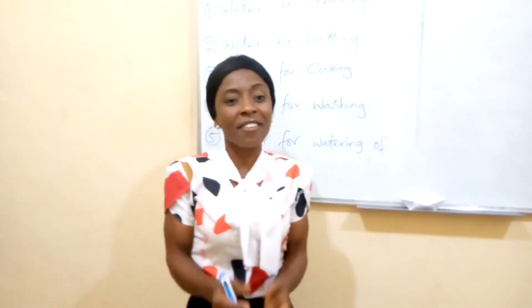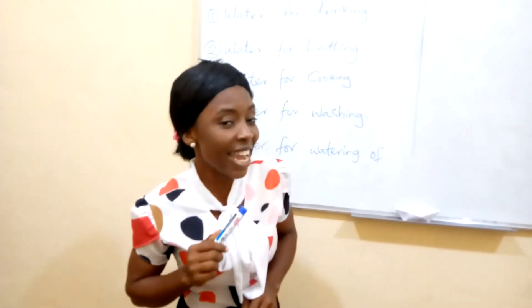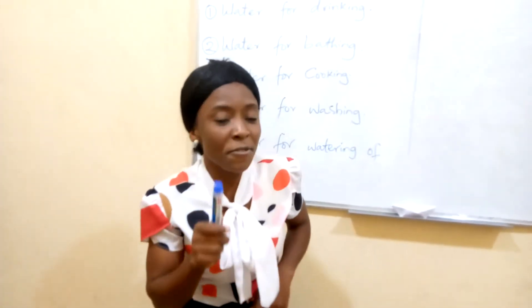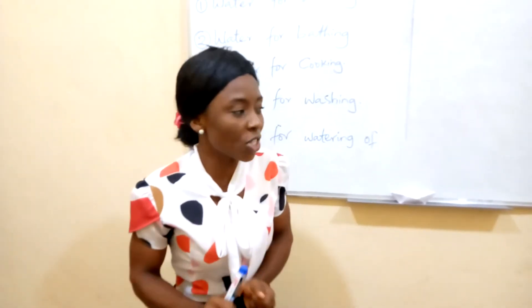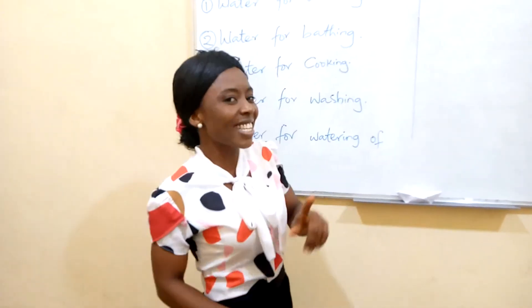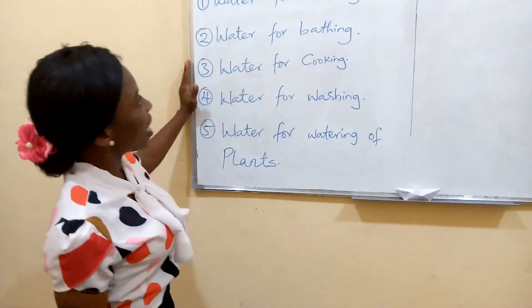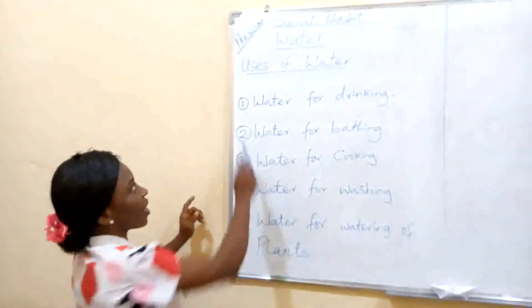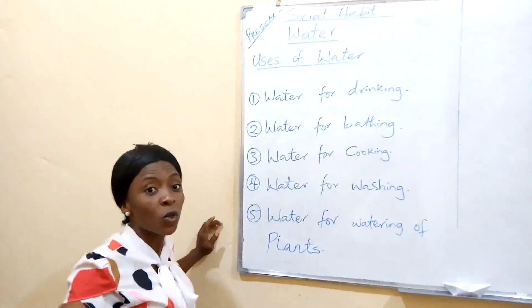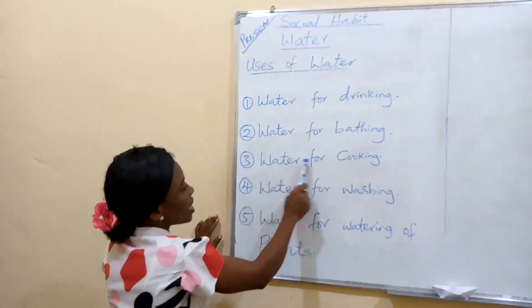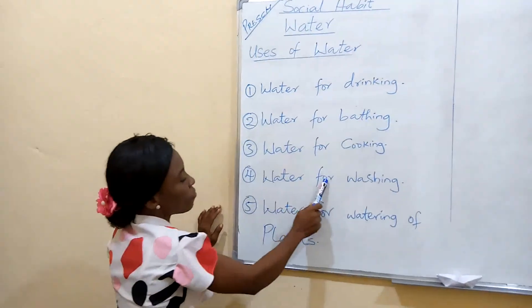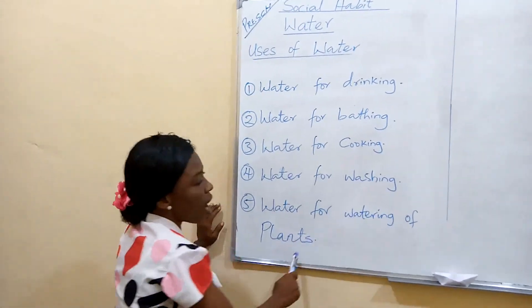My lovely children, we have seen the uses of water. Now, we use water for — did I hear you say cooking? Good. Water for — did you say washing? Good. Water for bathing. Lovely. And water for drinking. That is excellent. Right now, let's look at this. Uses of water — that is what we use water for: water for drinking, water for bathing, water for cooking, water for washing, water for watering of plants.